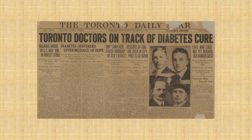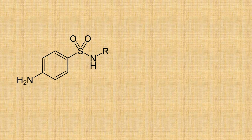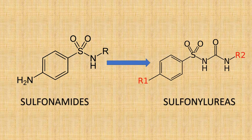Insulin was a magic bullet for type 1 diabetes, and drugs to treat type 2 diabetes would come 30 years later. They were actually discovered when clinical trials to test a group of antibiotics called sulfonamides were found to cause patients to faint. The fainting was due to hypoglycemia, so diabetes researchers used these results to create a new group of compounds that was effective for type 2 diabetes.